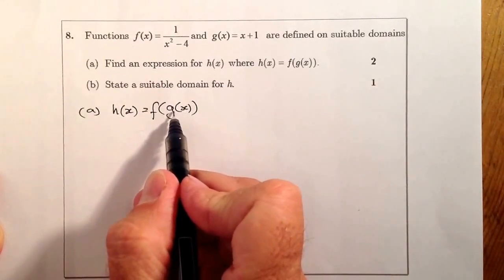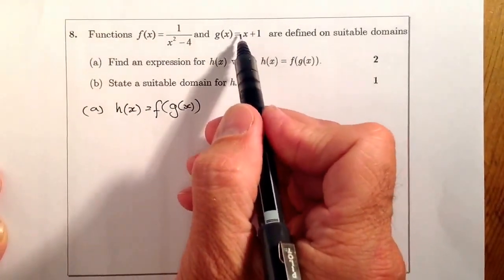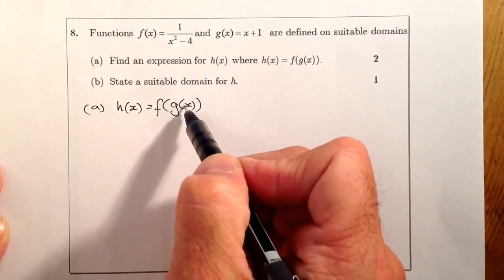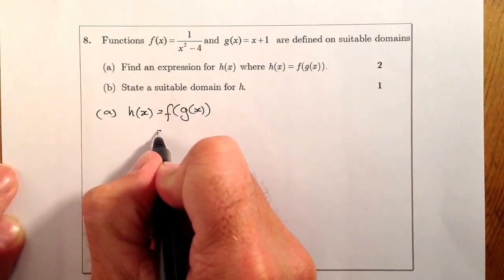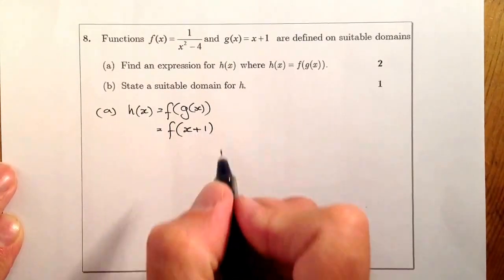Inside there I've got the g(x) function. So what I'm going to do is I'm just going to grab that, the x plus 1, and put it inside that bracket. So f of x plus 1.